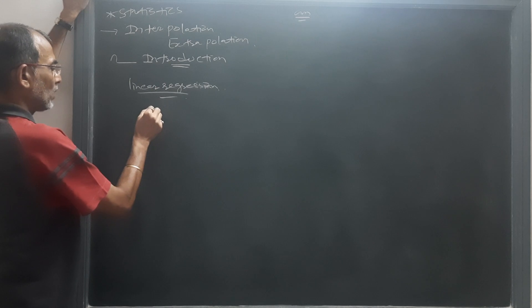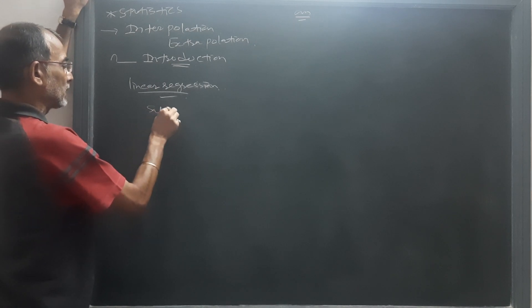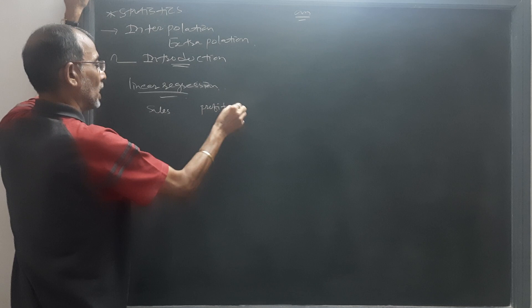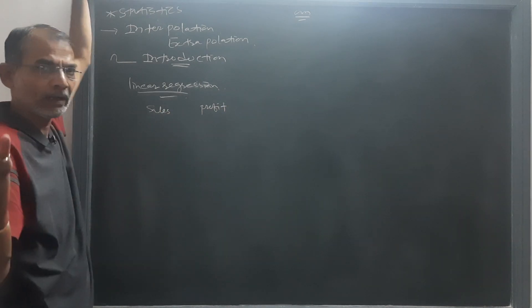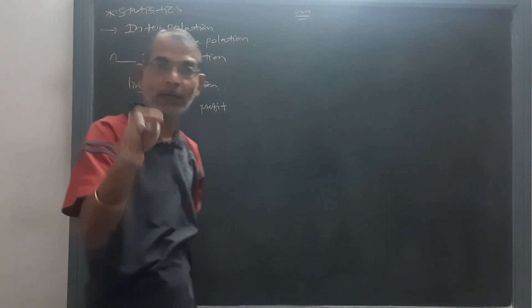How? As we can see that sales and profit. So, sales is an independent variable and profit is a dependent variable because profit is dependent on sales.